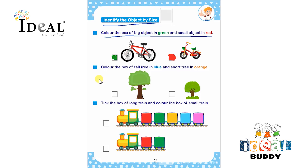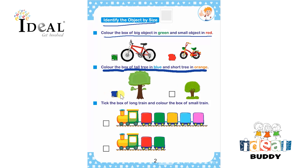After that, the next instruction is color the box of the tall tree in blue and short tree in orange. This is the tall tree and this is the short tree. The child has to color the tall tree with blue and the short tree using orange color.